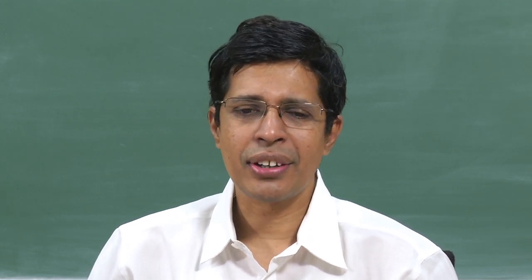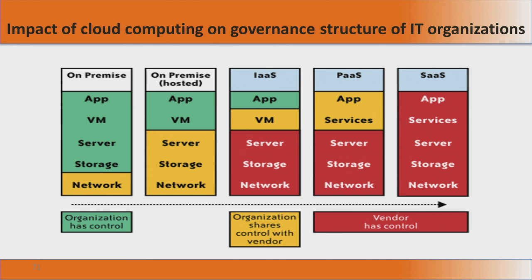Let us look at how the entire thing runs. There are at least five different models that we are looking at. One is having a data center on your own premises — for example, a bank that has the entire data center on premises. That means they own the storage, the server, and the virtual machine running on top of the server.